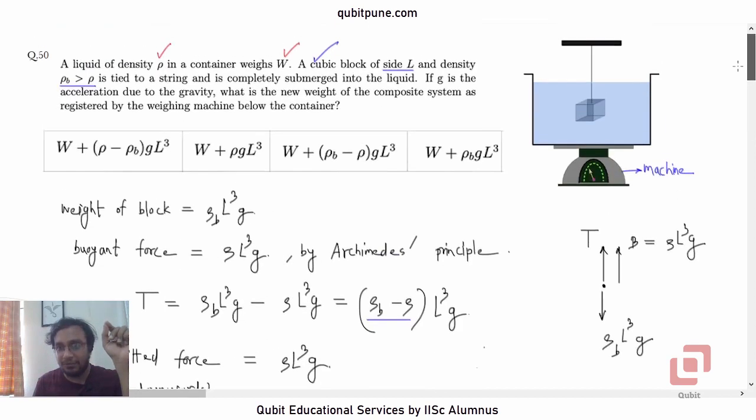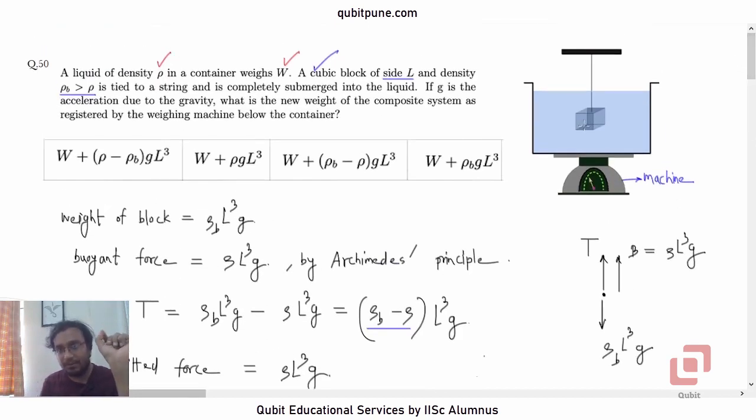We know that there will be buoyant force on the block. And there will also be tension. But the tension would have been more. And in that case, the reading on the machine will be just of the weight of the liquid. If we just hang this block here without liquid, then the tension will be equal to the weight.